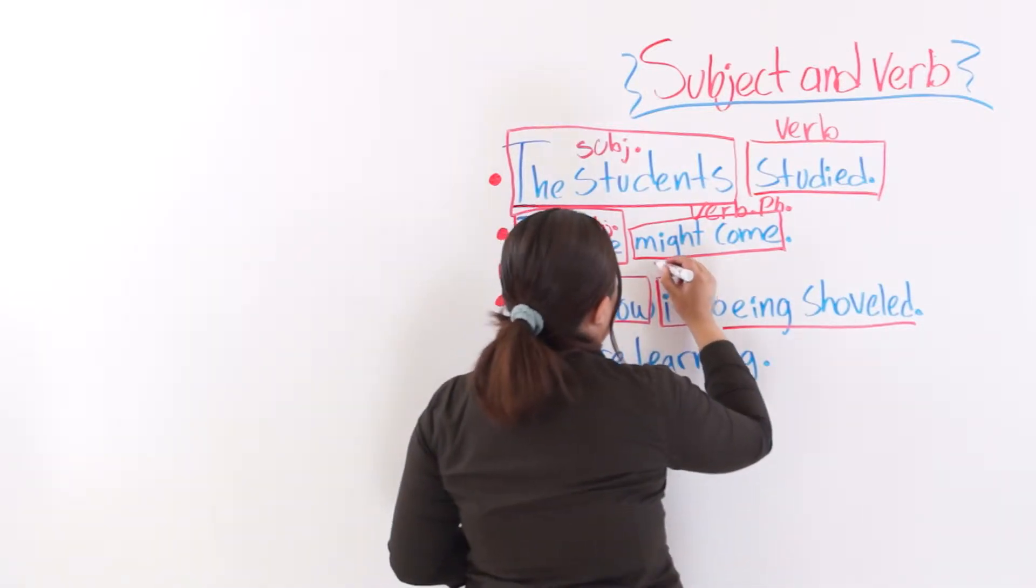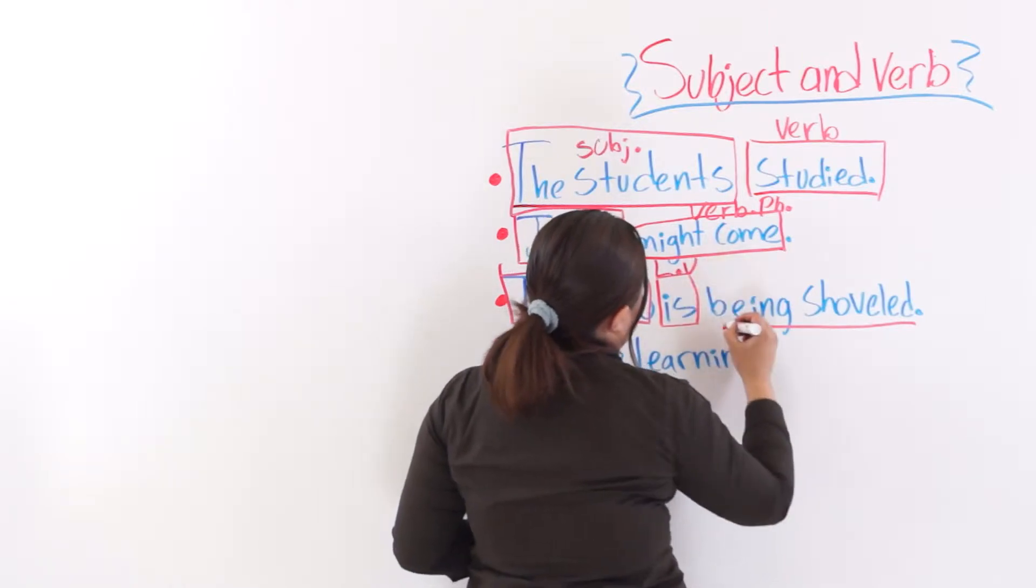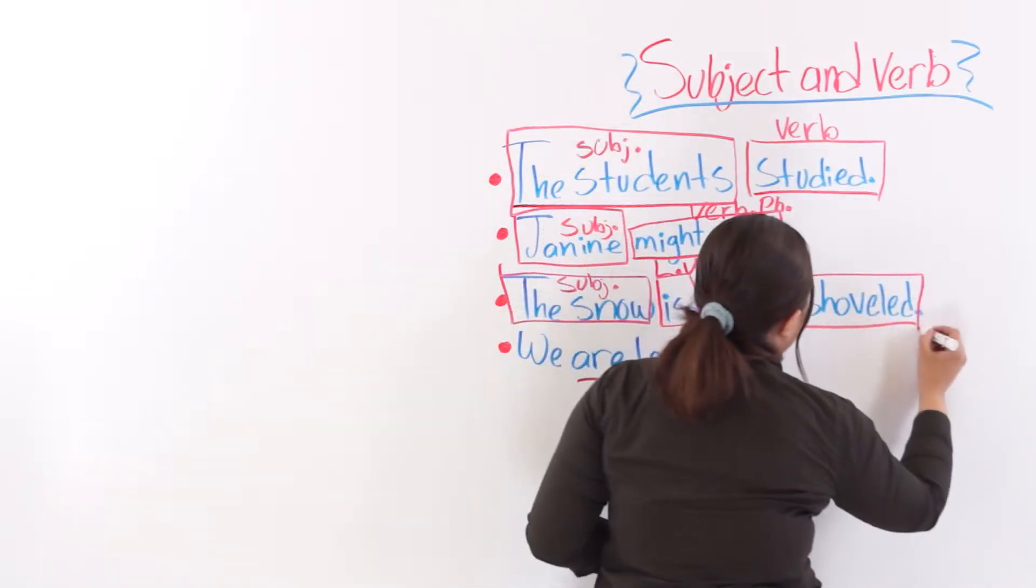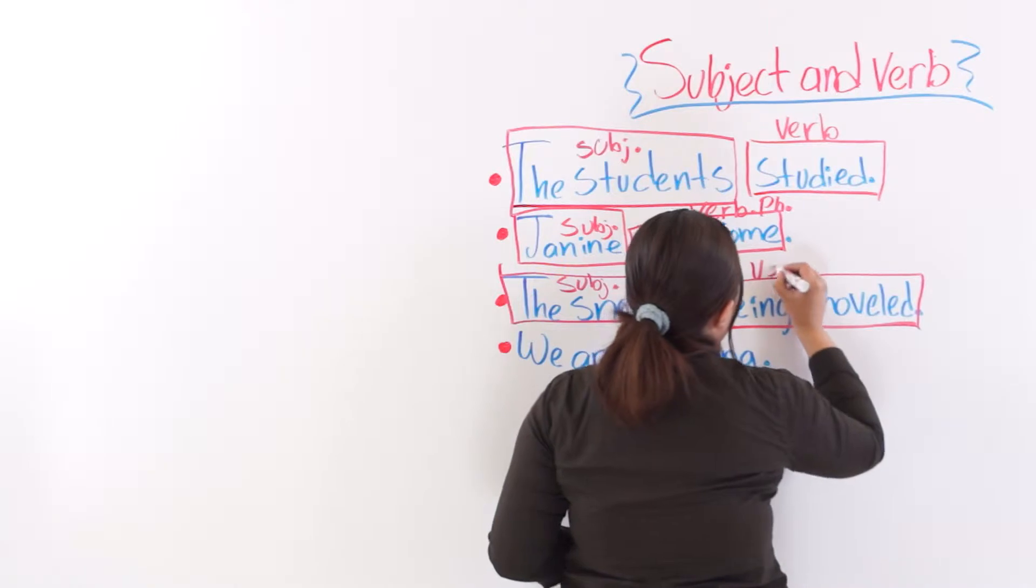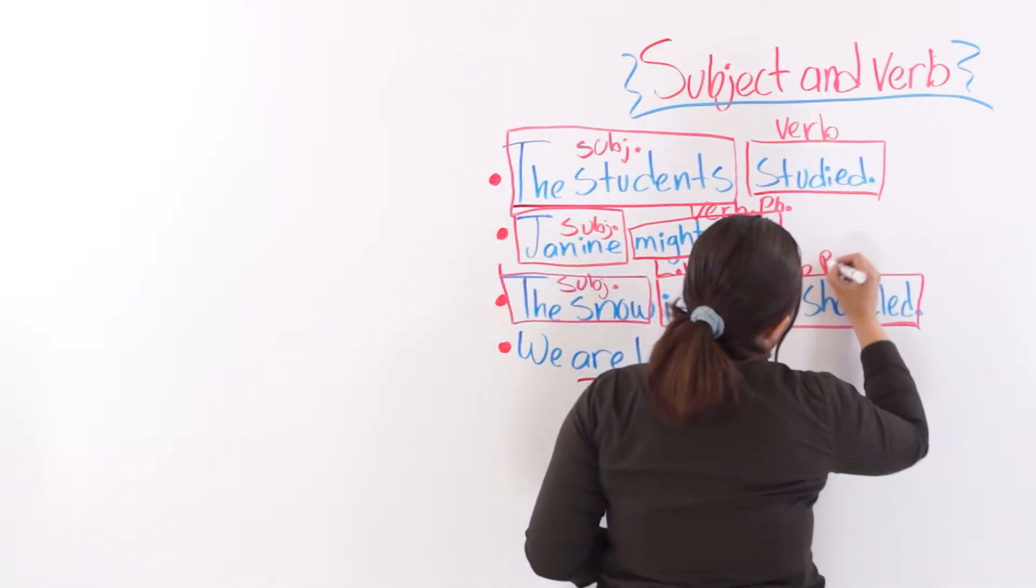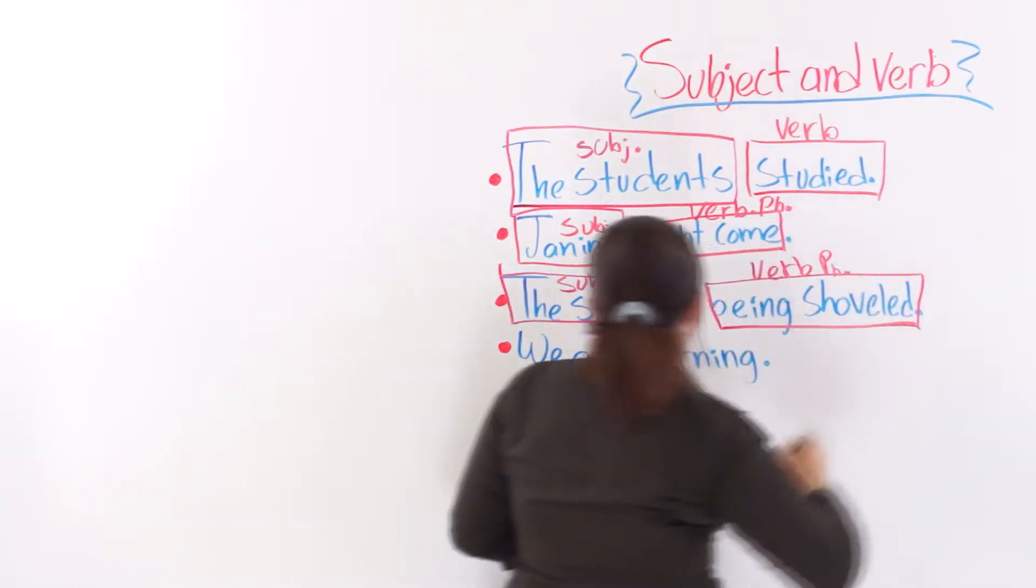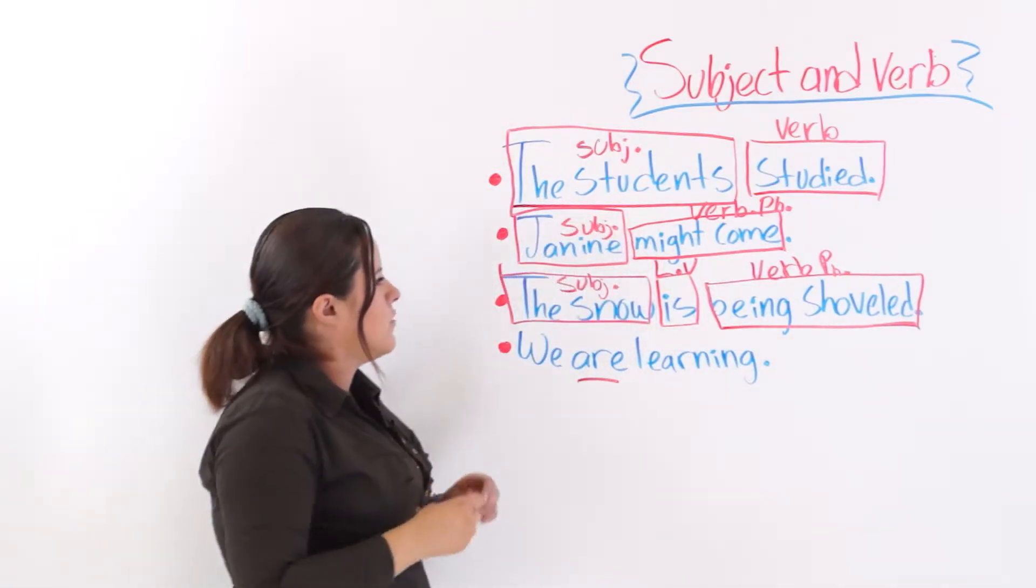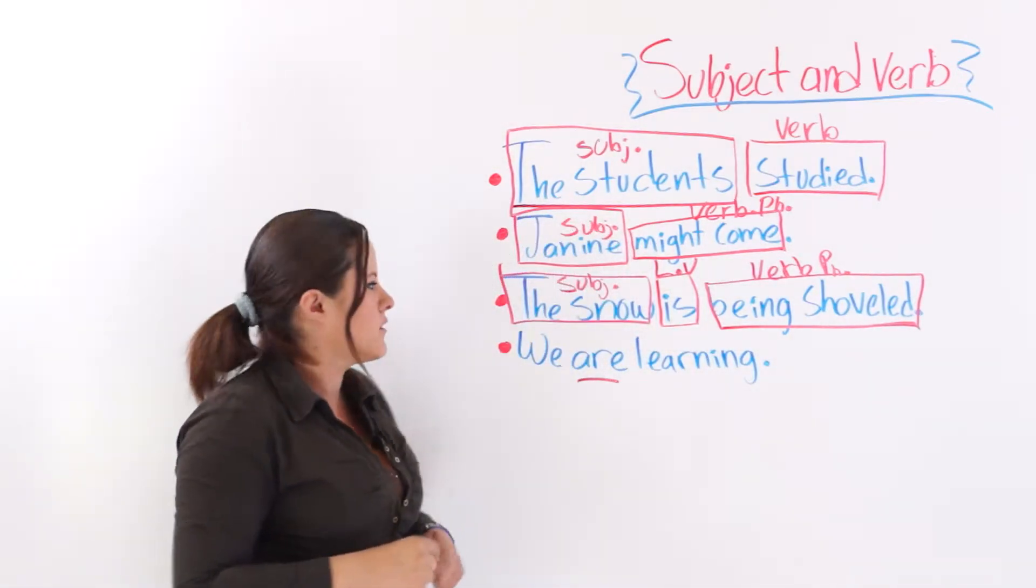So, we have a linking verb. And here, we have a verb phrase. Being shoveled. The snow is being shoveled. Alright?